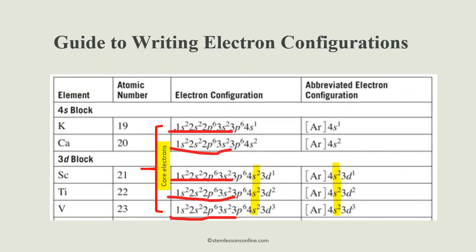This table shows the electron configurations for some fourth period elements. Notice that the D block elements have a principal quantum number one less than the period number. Also notice the noble gas configuration for each element — the core electron configuration is the same for all fourth period elements. Only the last subshell, 3D, is changing: 3D1, 3D2, 3D3, going in order.